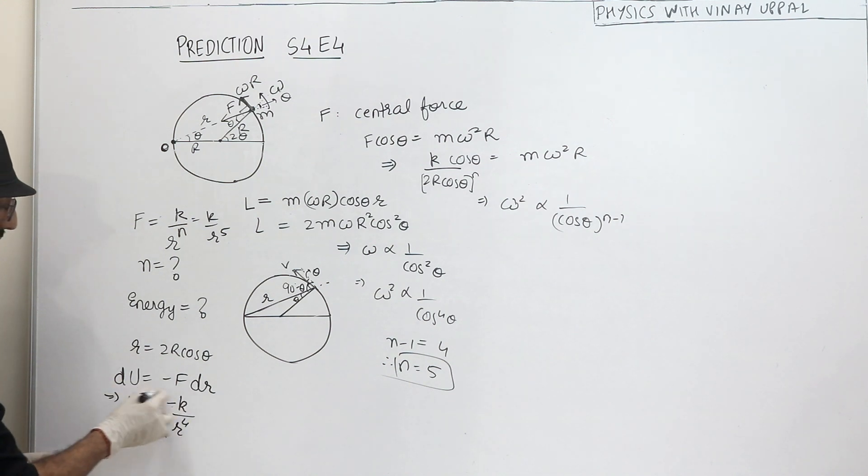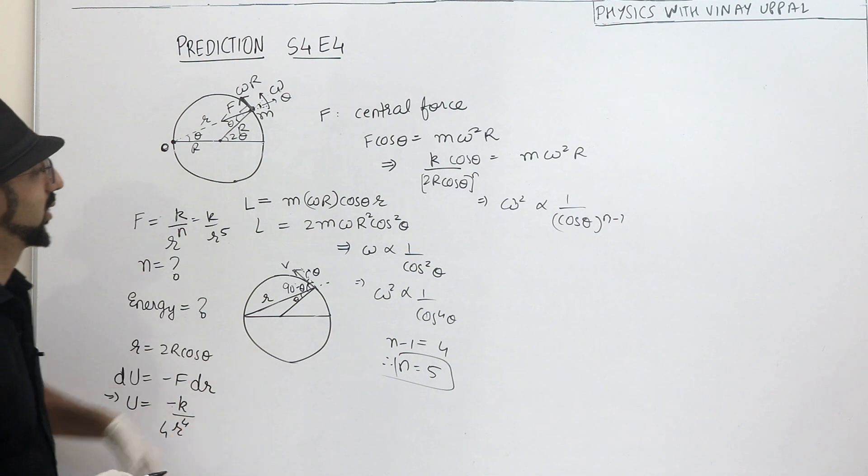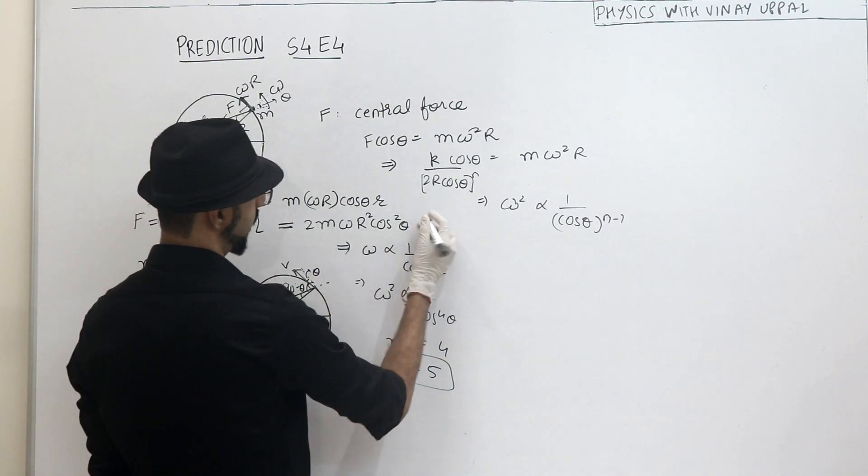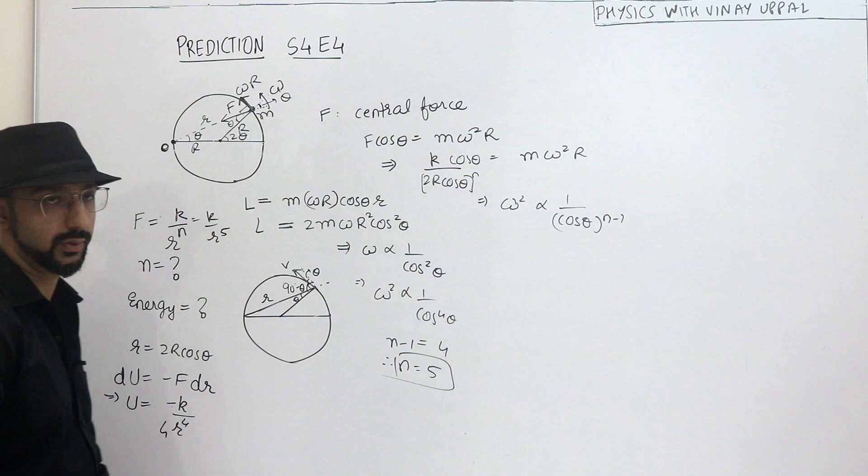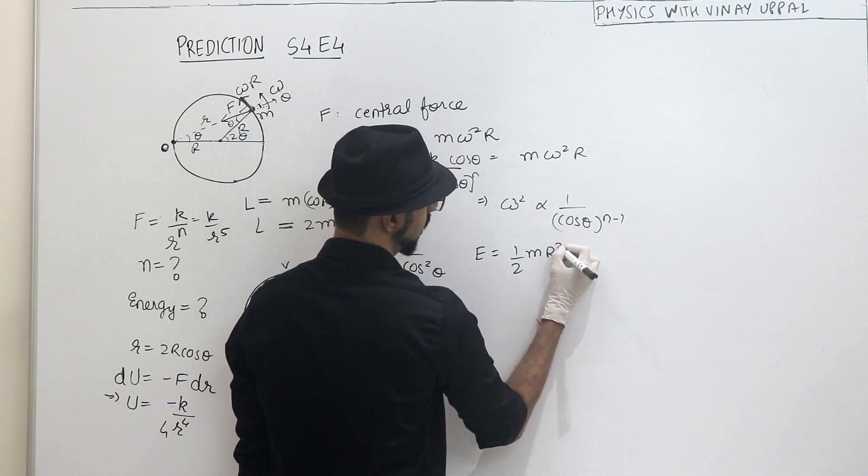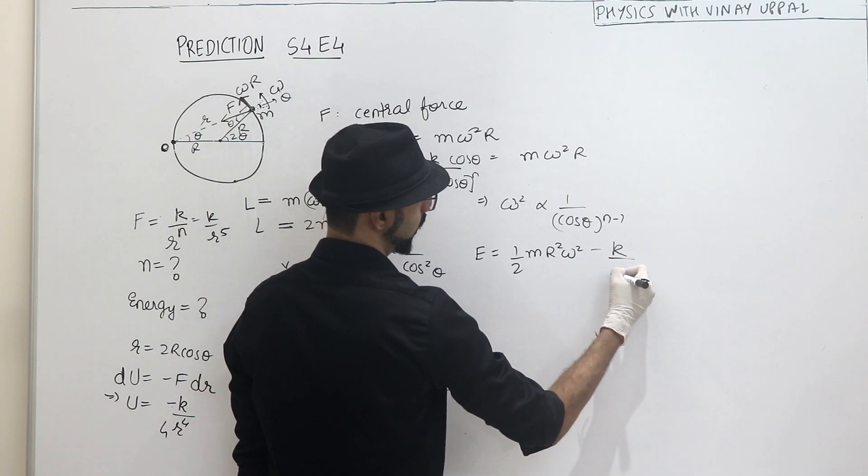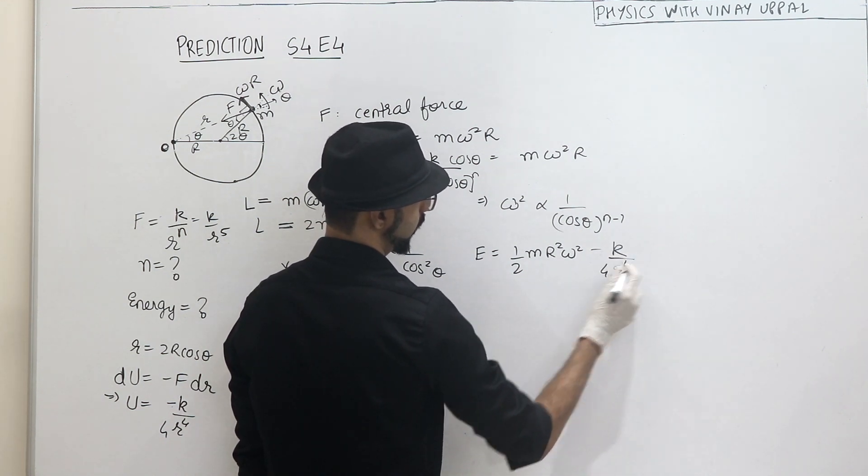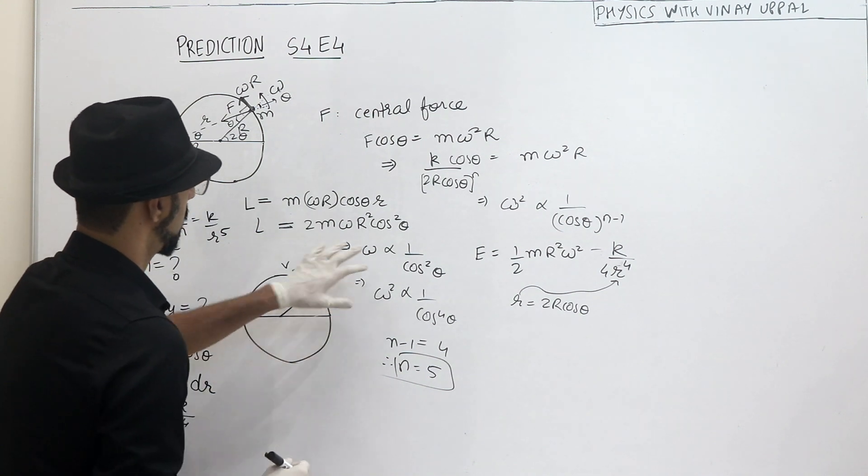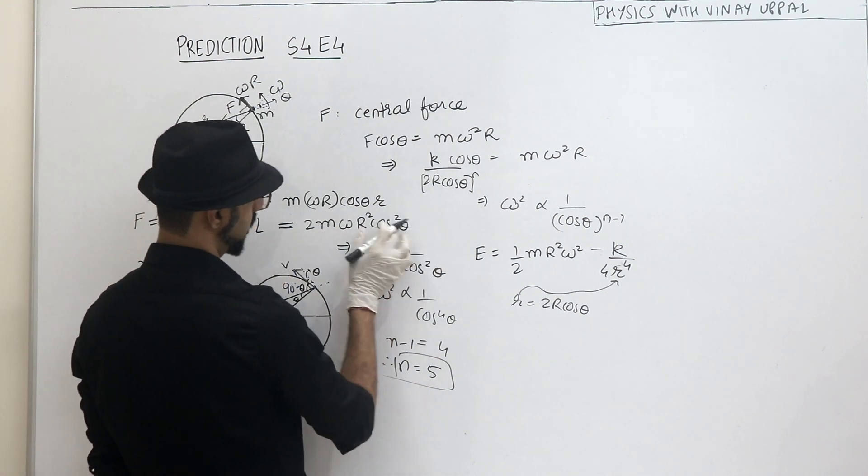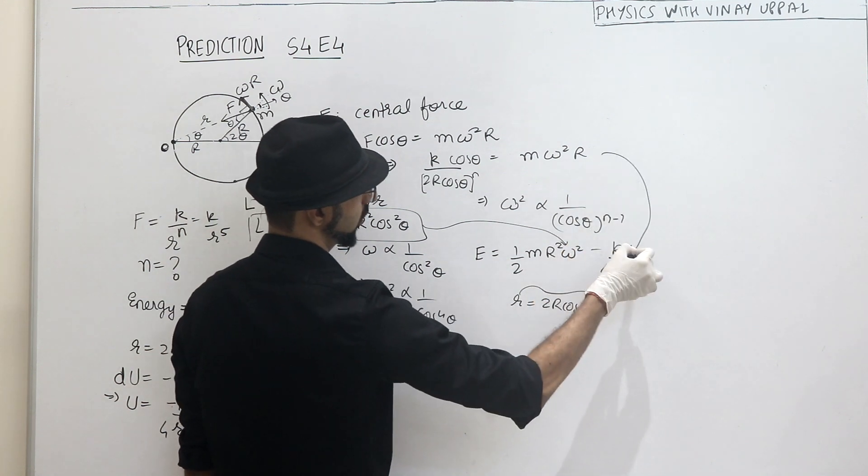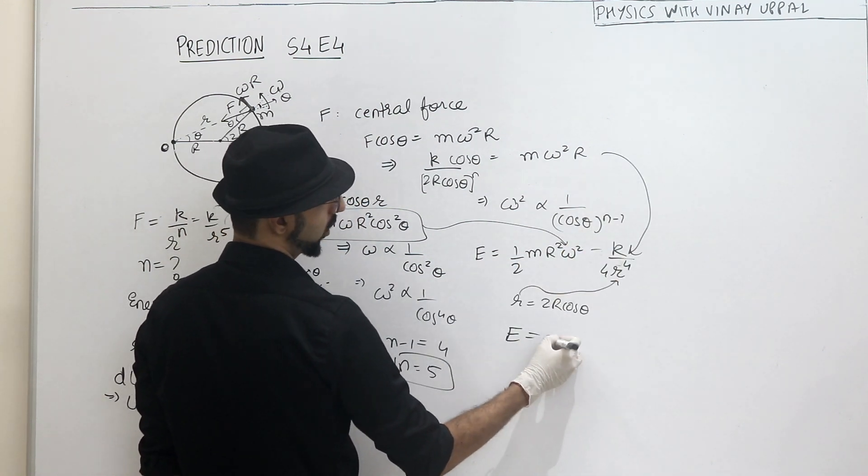Check it out. All right. So this is my potential energy. Okay, k value will come out. Here you will find the omega value in terms of angular momentum. Angular momentum is constant. So you will find the omega value and substitute it. Half m v square, or m r square omega square, plus potential energy which will be minus k by 4 r raise to 4. So express r as 2r cos theta and express omega in terms of cos theta from this equation. Here you will get omega from this equation.